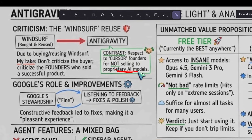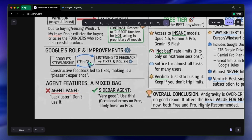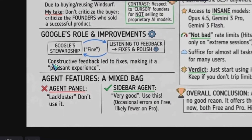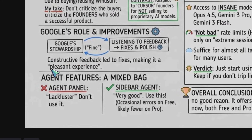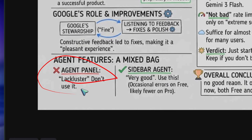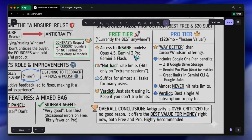I think what Google has done with anti-gravity is fine, and they have been listening to the constructive feedback and have fixed a lot of stuff here and there, making it a bit of a pleasant experience. I think anti-gravity's free tier is currently the best free tier that you can get anywhere. And even if you pay, then it is also the best $20 subscription. I am saying this because I am on the free tier.